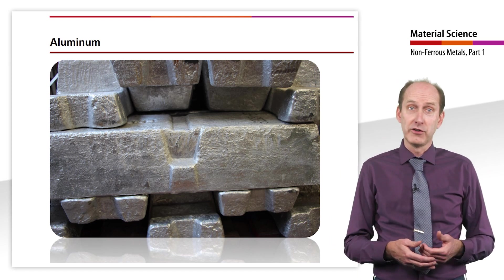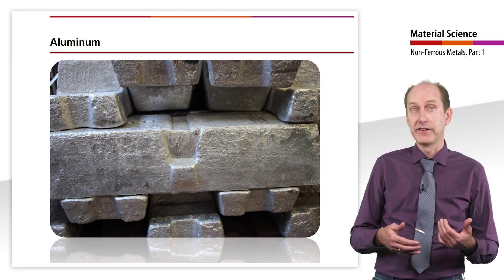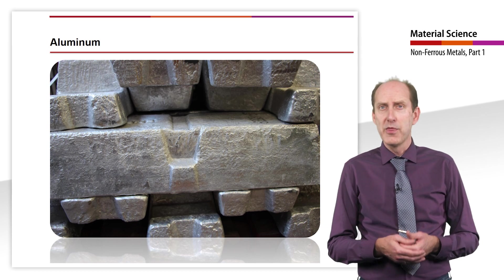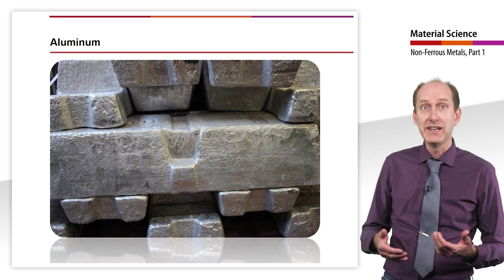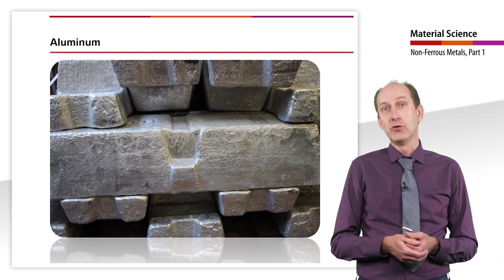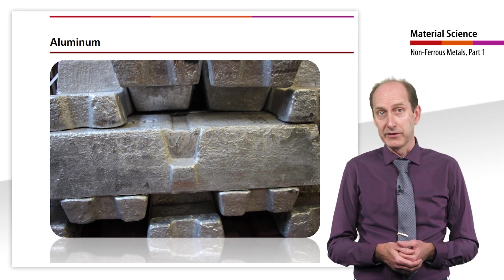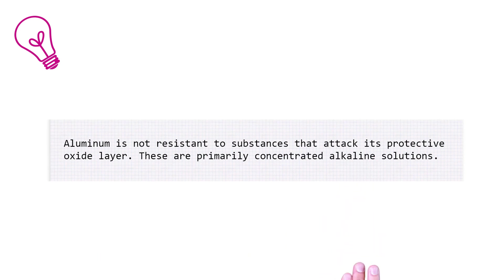The stronger the oxidizing effect of, for example, attacking acids, the more resistant the surface layer is, so that aluminum is even corrosion resistant to concentrated nitric acid. Aluminum is not resistant to substances that attack its protective oxide layer. These are primarily concentrated alkaline solutions.